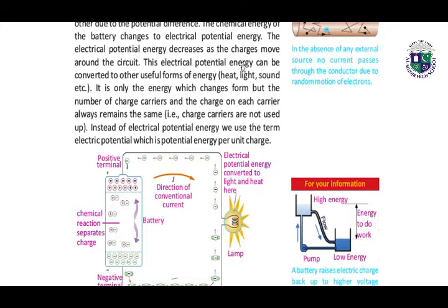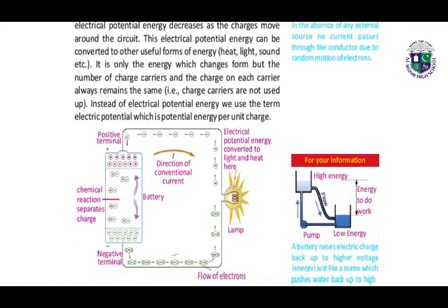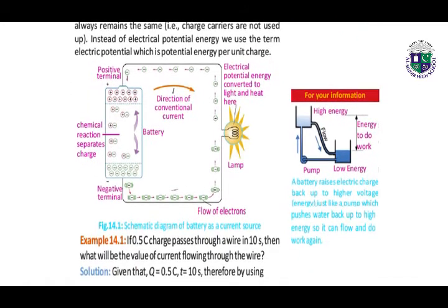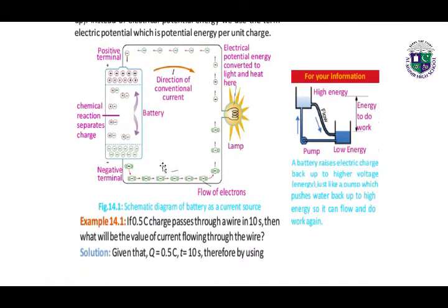This electrical potential energy can be converted to other useful forms of energy: heat, light, and sound. It is only the energy which changes form, but the number of charge carriers and the charge on each carrier always remain the same, as shown in figure 14.1. This is the symmetric diagram of the battery as a current source.